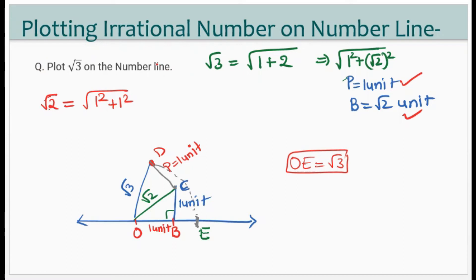If you have root 4 or root 5, you can extend this method further by building on the previous triangle. But root 4 is actually a rational number, so we can plot it directly.